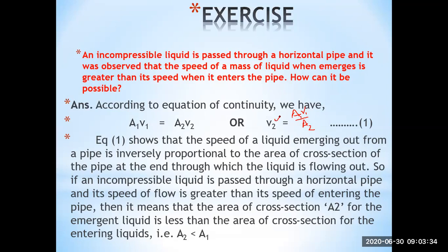So what does this mean? If there is a difference in the area of cross-section of the pipe, it plays an important role in increasing or decreasing the speed of the fluid. This shows that the speed of the liquid emerging from the pipe is inversely proportional to the area of cross-section of the pipe at the end through which the liquid flows out.